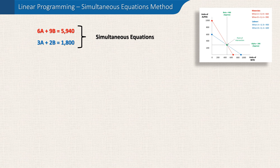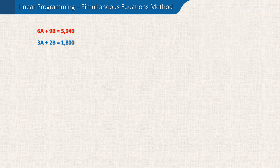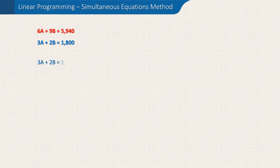There are several different mathematical approaches to doing this, one of the most common being through elimination. By manipulating either one or both equations, we'll be able to eliminate either A or B, which will lead us to solving both. Looking closely at our two equations, if we multiplied 3A by 2 in the second equation this would give us 6A, which features in our first equation. We'll need to multiply the whole equation by 2 — doing this gives us a new equation: 6A plus 4B equals 3600.